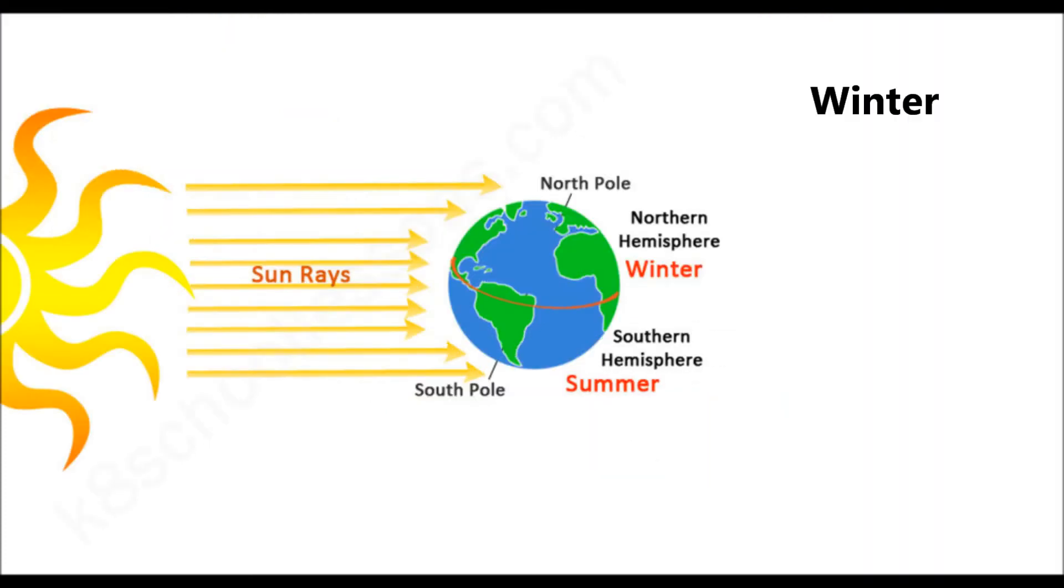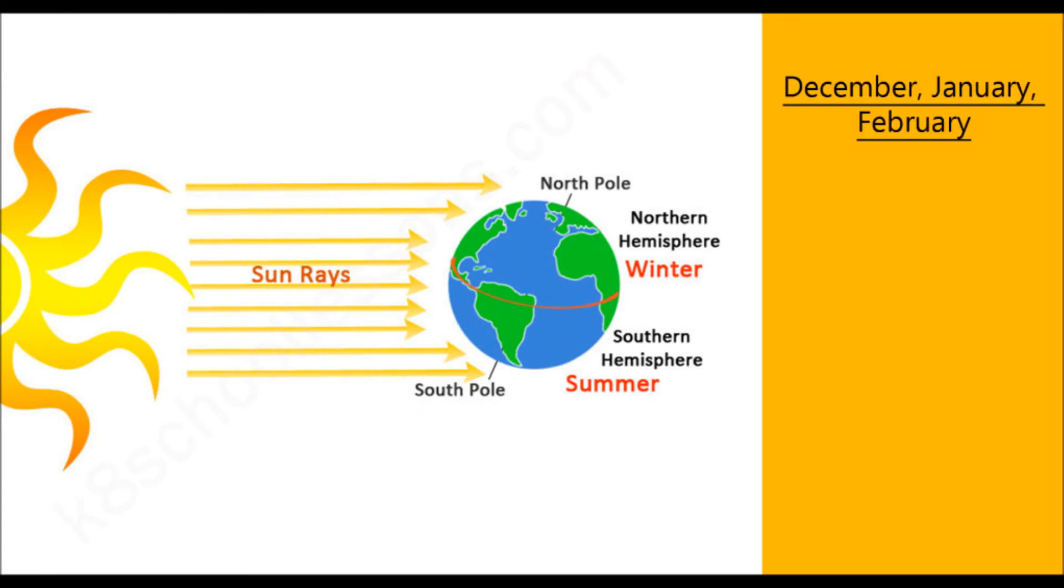Winter is the last of the four seasons. In December, January, and February, the South Pole is tilted towards the Sun. The Northern Hemisphere receives fewer sun rays, causing short days and chilly weather. The Southern Hemisphere enjoys summer during this time.